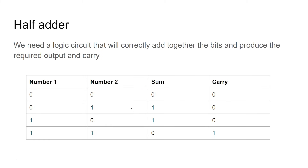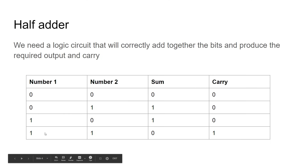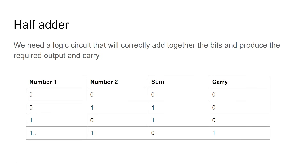If you look at the truth table: if number 1 is 0 and number 2 is 0, the sum is 0 and the carry is 0. If number 1 is 0 and number 2 is 1, they make a total of 1 with nothing to carry. Same if you flip them — number 1 is 1, number 2 is 0: sum 1, carry 0. The only really difficult one is if both number 1 and number 2 are on — the sum is set to 0 but we carry over a 1 onto the next digit.